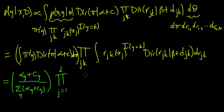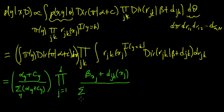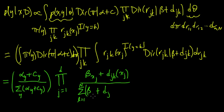Just like before, that expectation is (β_{X_J} + D_{JK,X_J}) divided by the sum over all L from 1 to N of (β_L + D_{JK,L}).